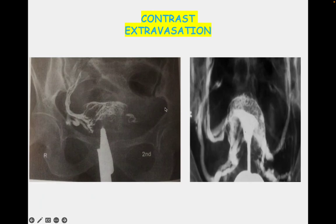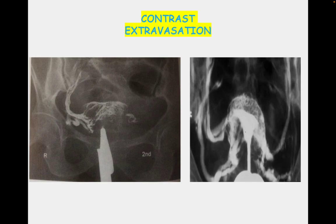The contrast extravasation shown here is because of blockage with dye getting into the vessels. So these were all the typical HSG findings in tuberculosis — the classic terms found in textbooks — and I hope they are now clear to you. Thank you.